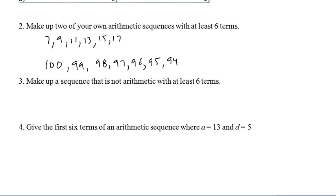And number 3, make up a sequence that's not arithmetic with at least 6 terms. So, that's easier than anything. Go 3, 7, negative 2, 14, 2003, 175, 12. Obviously, those aren't going up by the same amount every time or changing by the same amount every time, adding or subtracting. So, not arithmetic.